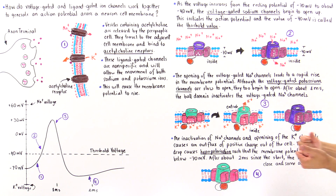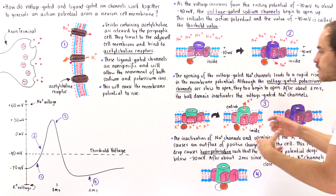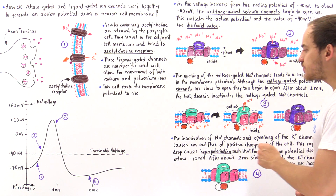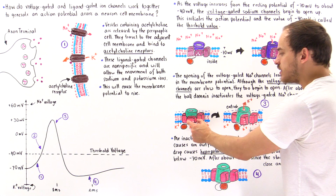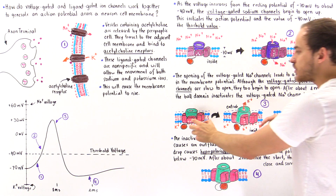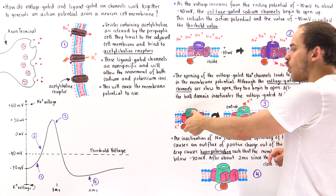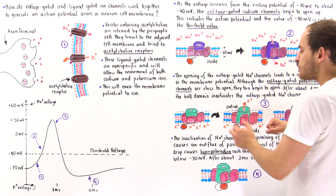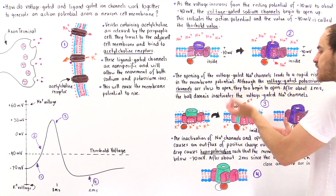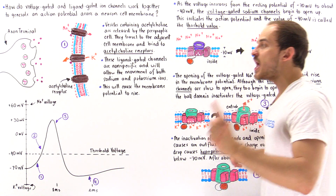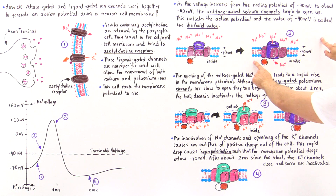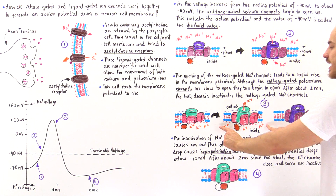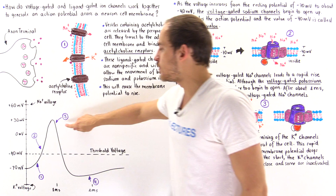Although the voltage-gated potassium channels are slow to open, they too begin to open. After about one millisecond of the sodium voltage-gated ion channels being open, those sodium channels begin to close as the ball domain enters the pore and blocks it. At that same moment, the potassium voltage-gated ion channels accelerate their opening — the paddle domains orient as a result of the depolarization, widening the pore at the bottom, allowing potassium ions to move down their electrochemical gradient from inside to outside.